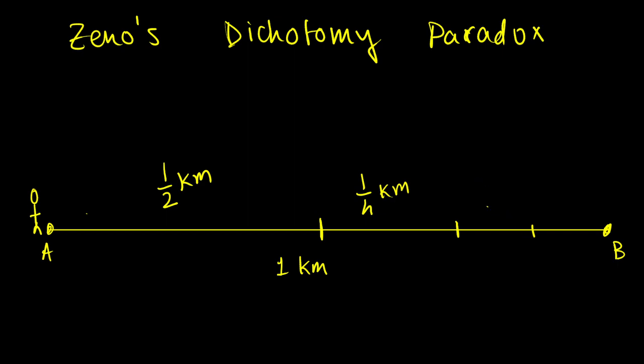And again, the remaining half of the distance, which is one-eighth of a kilometer, and so on. You get the pattern, right? If you magnify this, you'll see that there are infinite such half distances that you'll have to cover. And that means distance is infinite?